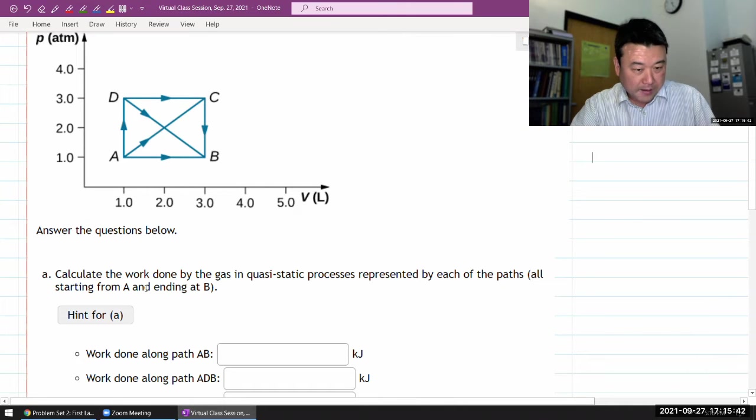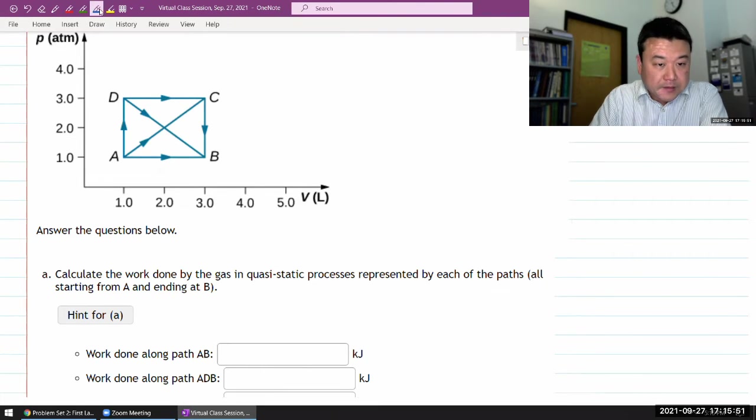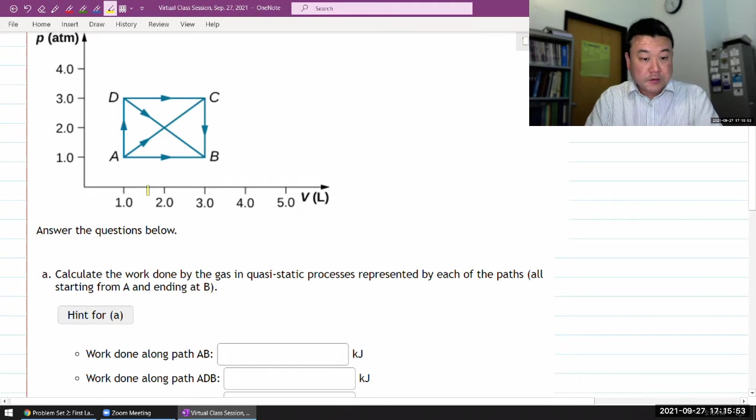So I'm limiting myself to those starting at A and ending at B. So if you have work done along path AB, this is what I want you to illustrate. So on a PV diagram, work done has a very graphical representation. It's the area under the curve.